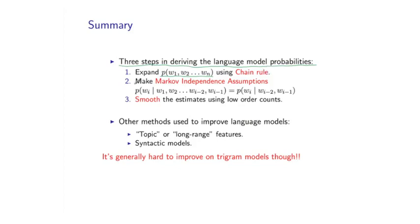And the second step was to make Markov independence assumptions. In particular, assuming that the probability of some word WI, conditioned on the entire previous sequence of I-1 previous words, actually depends only on the previous two words in the sequence. We call this a second order Markov assumption.